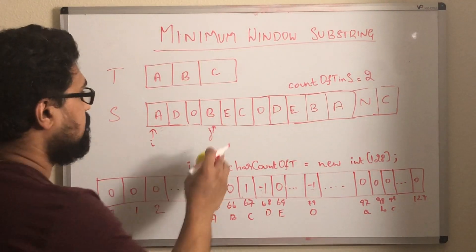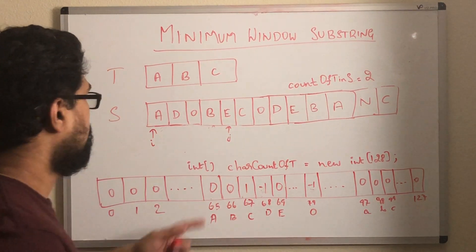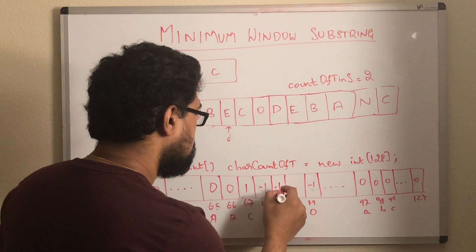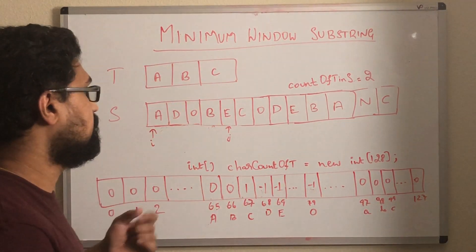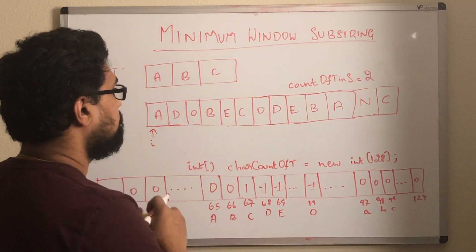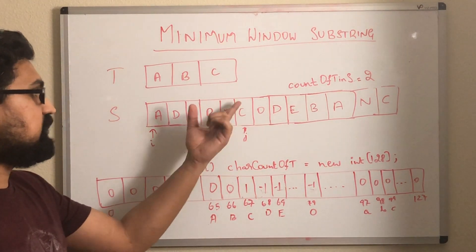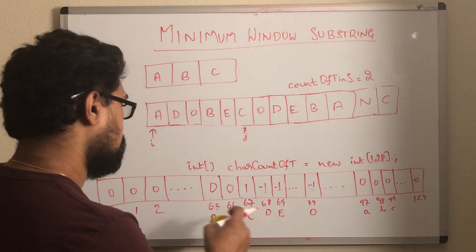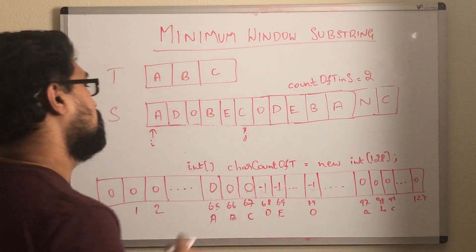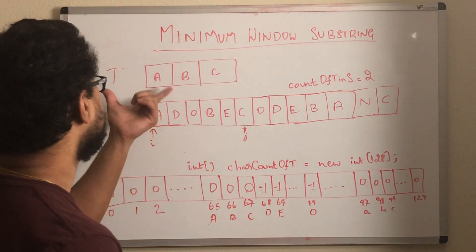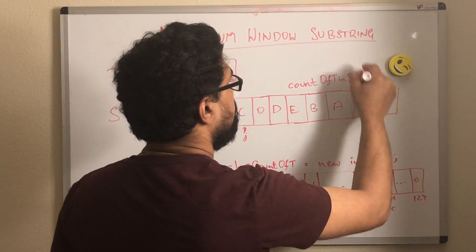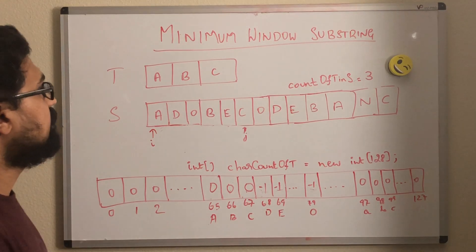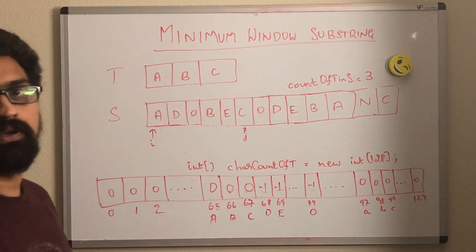Now let's increment j. The character pointed by j is e. So let's decrement the value of e in this character count array. This becomes 0, which is greater than or equal to 0 — but wait, e is not seen in t, so we can ignore it and move to the next index. Now the character pointed by j is c. Let's decrement the value of c in this character count array. This becomes 0, which is greater than or equal to 0. That means this is a character seen in t. So let's increment the count. Now the count of t in s is equal to the length of t, which is 3. That means we have found a window.